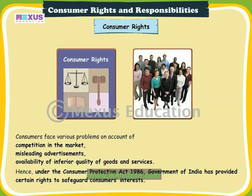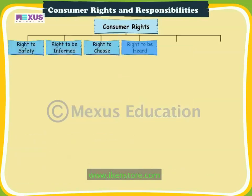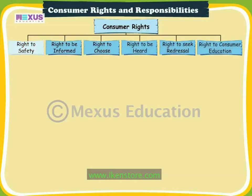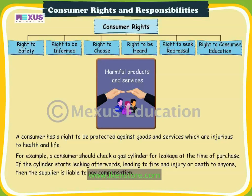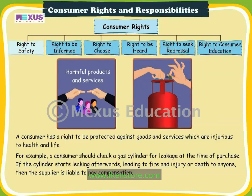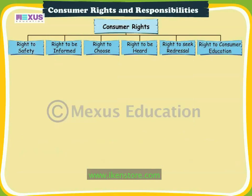Let us understand these rights in detail. Right to safety: a consumer has a right to be protected against goods and services which are injurious to health and life. For example, a consumer should check a gas cylinder for leakage at the time of purchase. If the cylinder starts leaking afterwards, leading to fire and injury or death to anyone, then the supplier is liable to pay compensation.